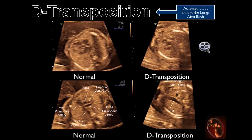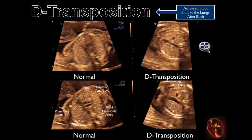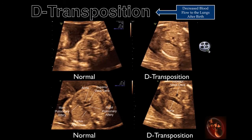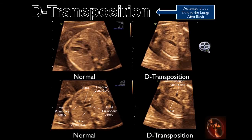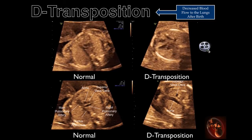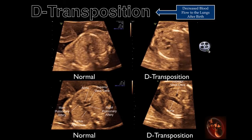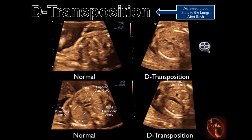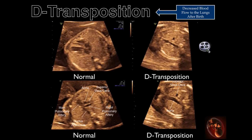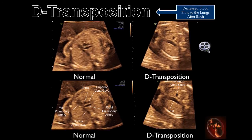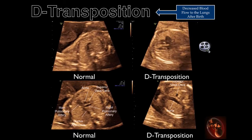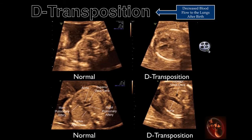Note the following. One, the four-chamber view in both fetuses appears to be normal. Two, the left outflow tract view demonstrates the ascending aorta to be similar in both fetuses. However, as the aorta begins its course posteriorly, notice that it bifurcates in the fetus with D-transposition, becoming the pulmonary artery.